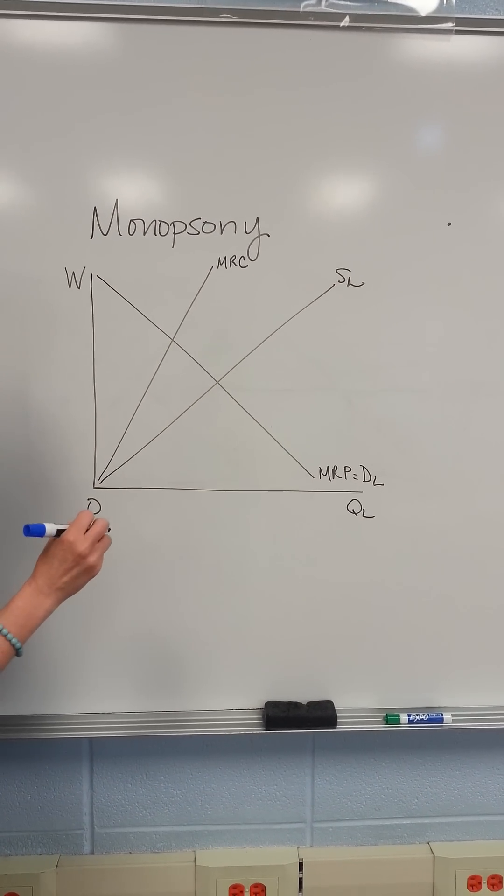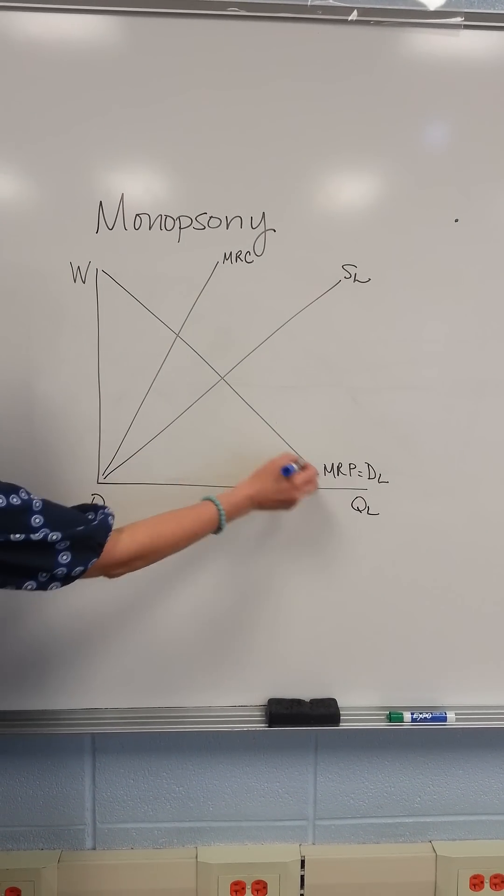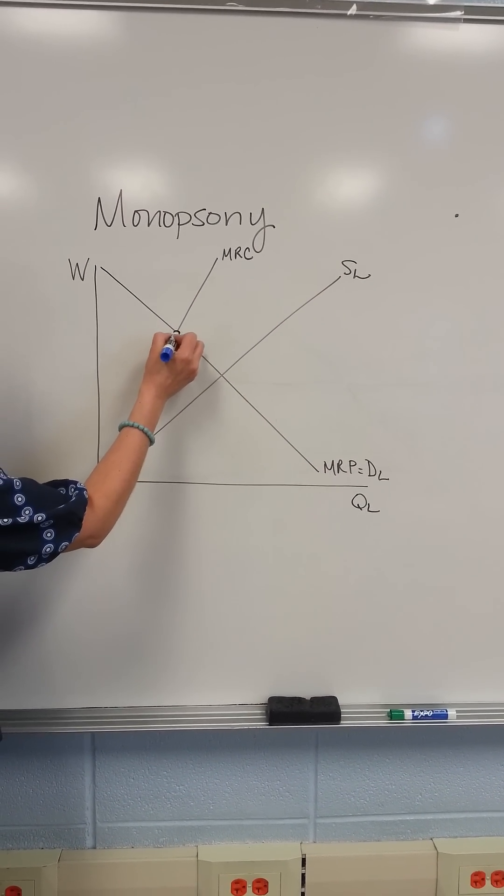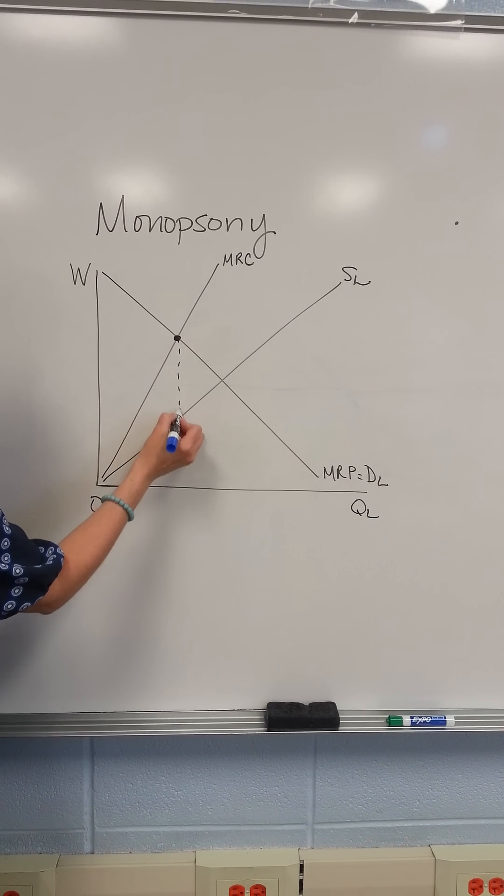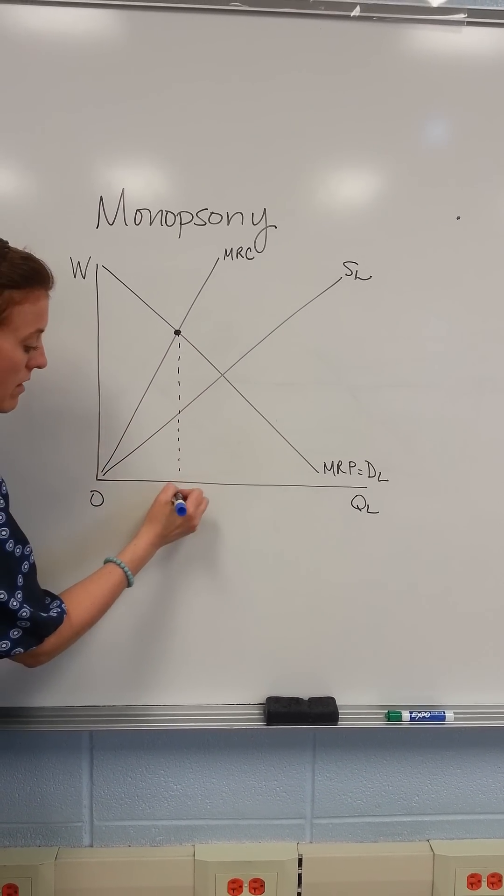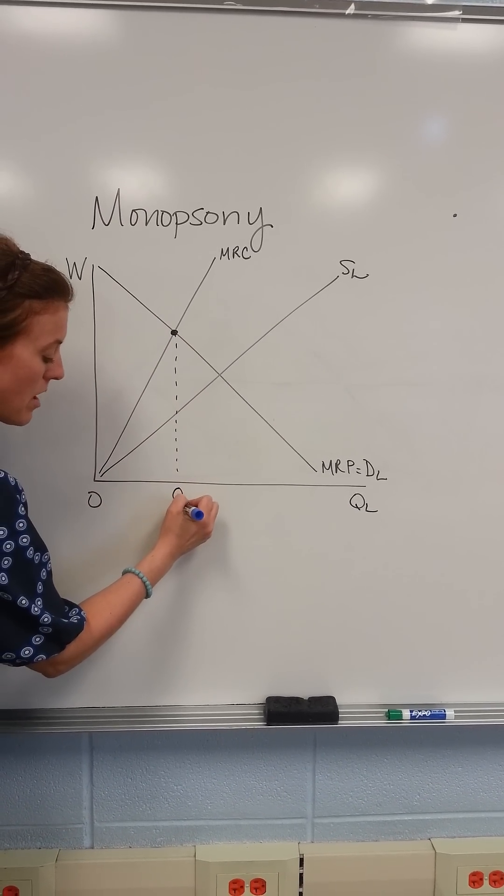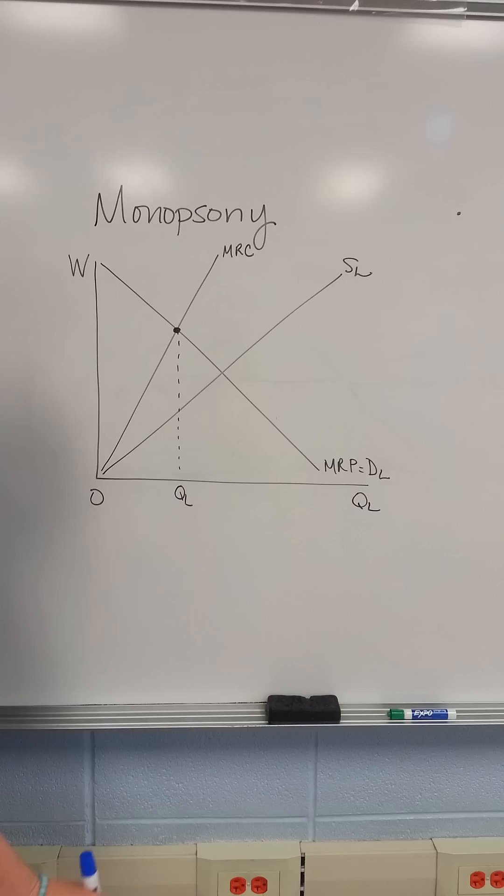The profit-maximizing number of workers that will be hired is where MRP equals MRC. From this point, we drop down an anchor line to determine the number of workers that will be hired.